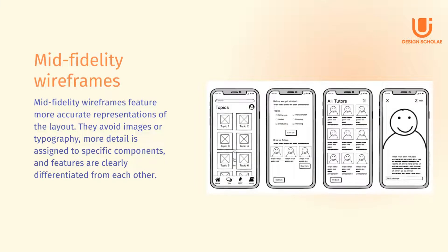Mid fidelity wireframes feature more accurate representations of the layout. They avoid images or typography, and more detail is assigned to specific contents, with features clearly differentiated from each other. Varying text weights might also be used to separate headings and body content. Though still black and white, designers can use different shades of grey to communicate the visual prominence of individual elements.